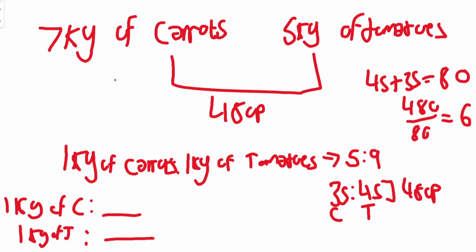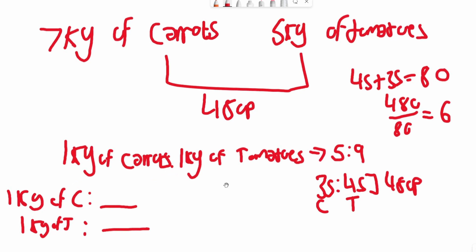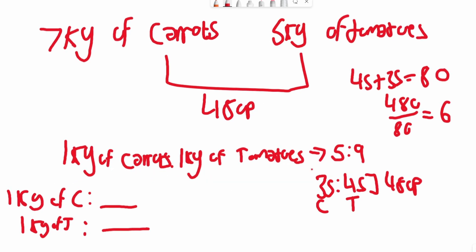You put it back into the original question. This is a ratio of 1kg of something, so all you gotta do is times 5 and 9 by 6. If this is 5 and this is 9, you times them both by 6 to get that this is 30, and times this by 6 is 54.